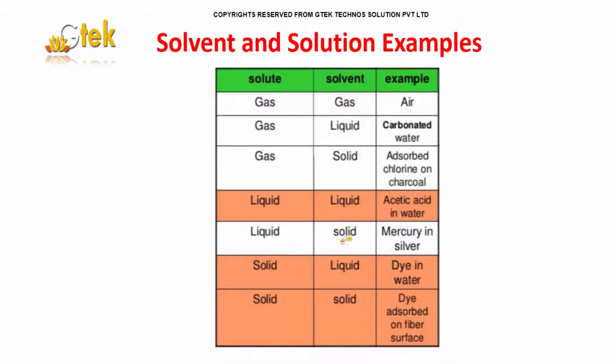Liquid in liquid is acetic acid in water. Liquid in solids is mercury and silver. Solid in liquid is dye in water. Solid in solid is dye absorbed on fiber surface. These are the typical examples.